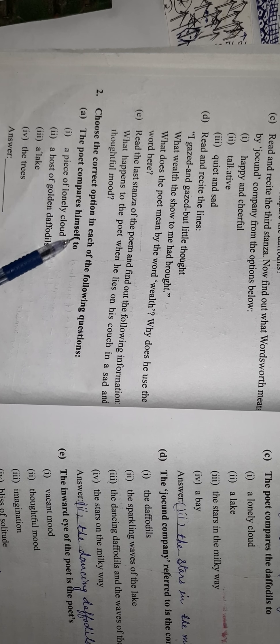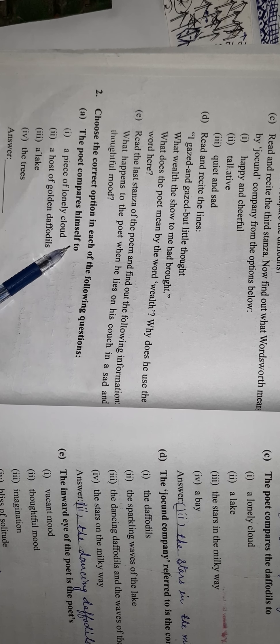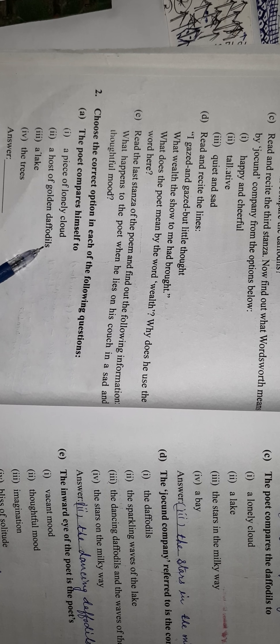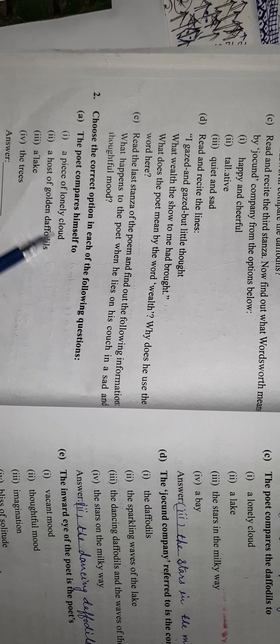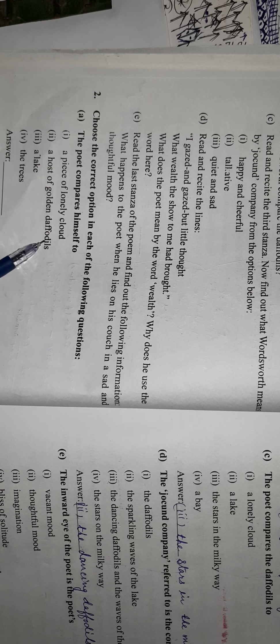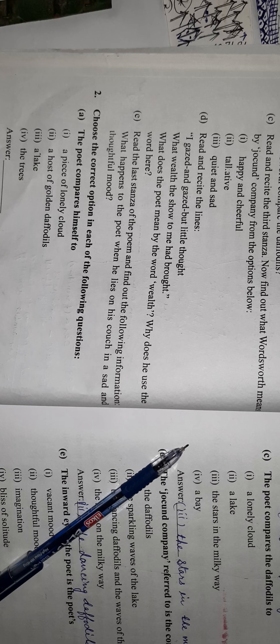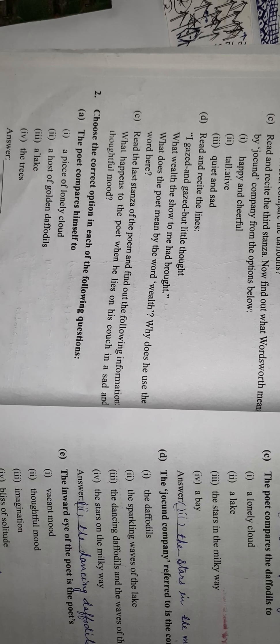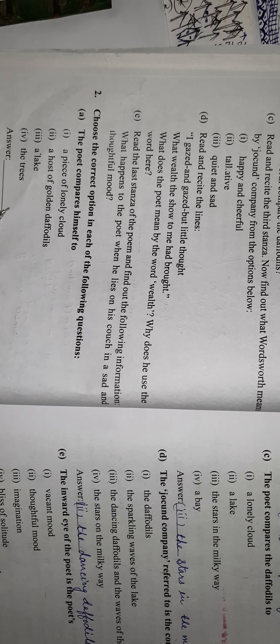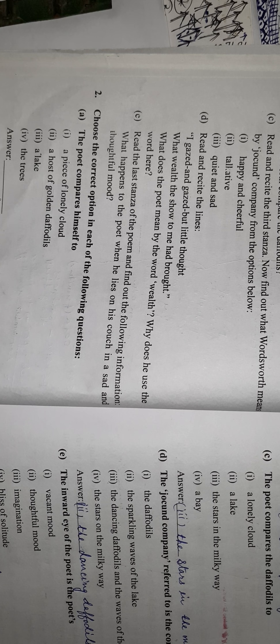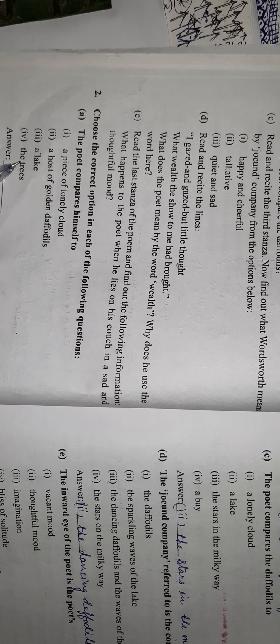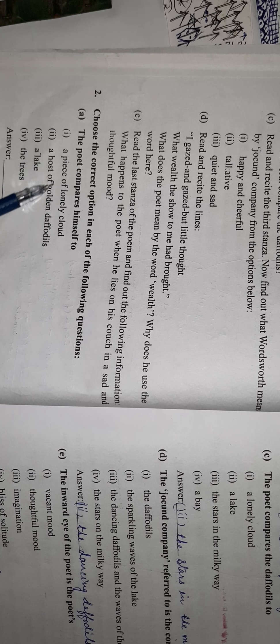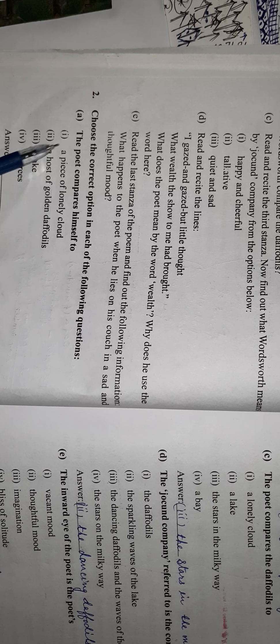Then, the poet compares himself to his emotions. A piece of lonely cloud, a host of golden daffodils, a lake, the trees. So, the poet compares himself with a piece of golden cloud. This is the first one.